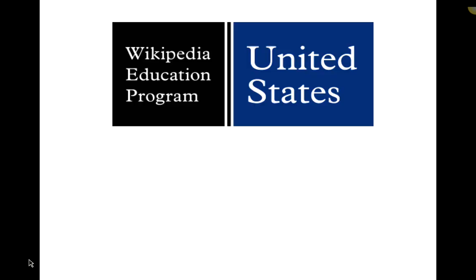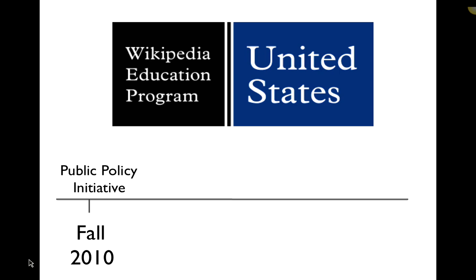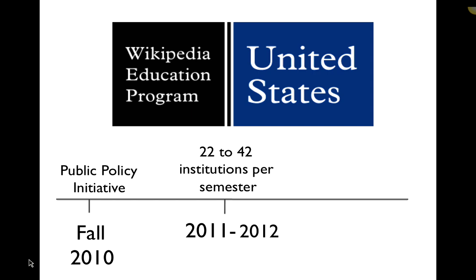We chose to join an official program that Wikipedia sponsored. Wikipedia is run by a non-profit called the Wikimedia Foundation. For several years they've had an education program that started with graduate courses in public policy in fall 2010, where they provided what they called ambassadors to faculty willing to assign Wikipedia articles to their students, with support from the Wikimedia Foundation. In 2011-2012, anywhere from 22 to 42 institutions participated in the US.